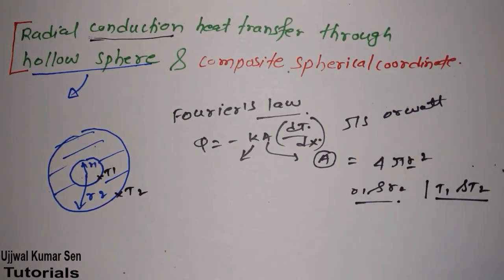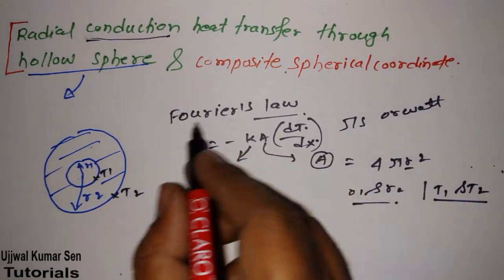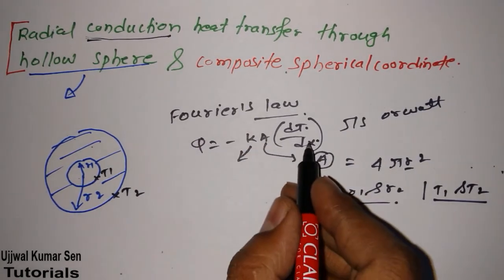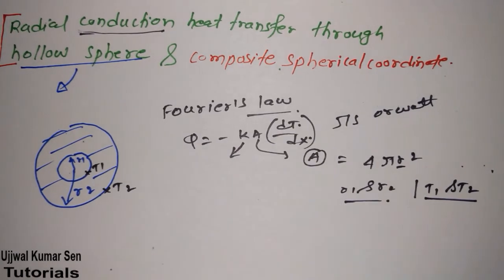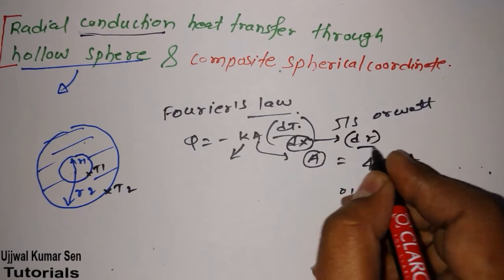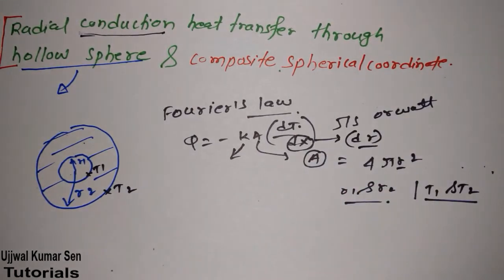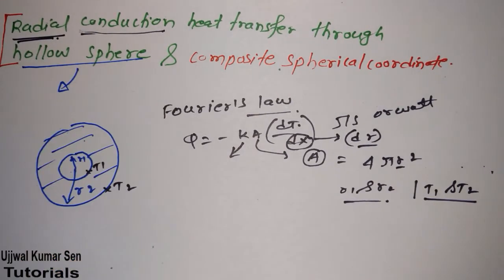Suppose the temperature at r1 is T1 and at r2 is T2. The best way to utilize these two things is by doing integration. Here dx is replaced by dr because the conduction is taking place radially.